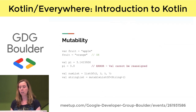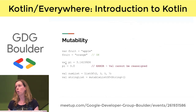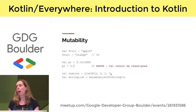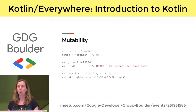On mutability: Kotlin encourages you to use immutable variables whenever you can. If you want a mutable variable, you use the var keyword and then you can change the value. If you want an immutable variable, you use val and you cannot change it after that — it's essentially like using the final keyword in Java, just a little tidier. Collections are also immutable by default. If you create a list with the listOf operator, that will be an immutable list that you cannot add to or remove from.